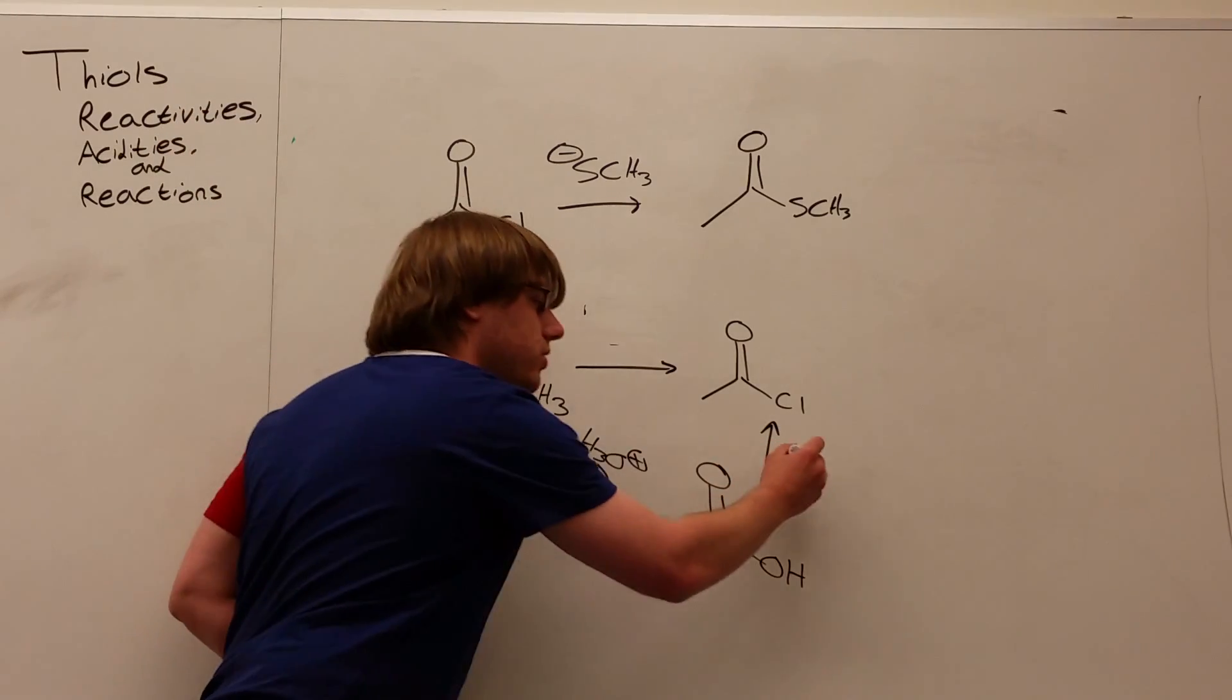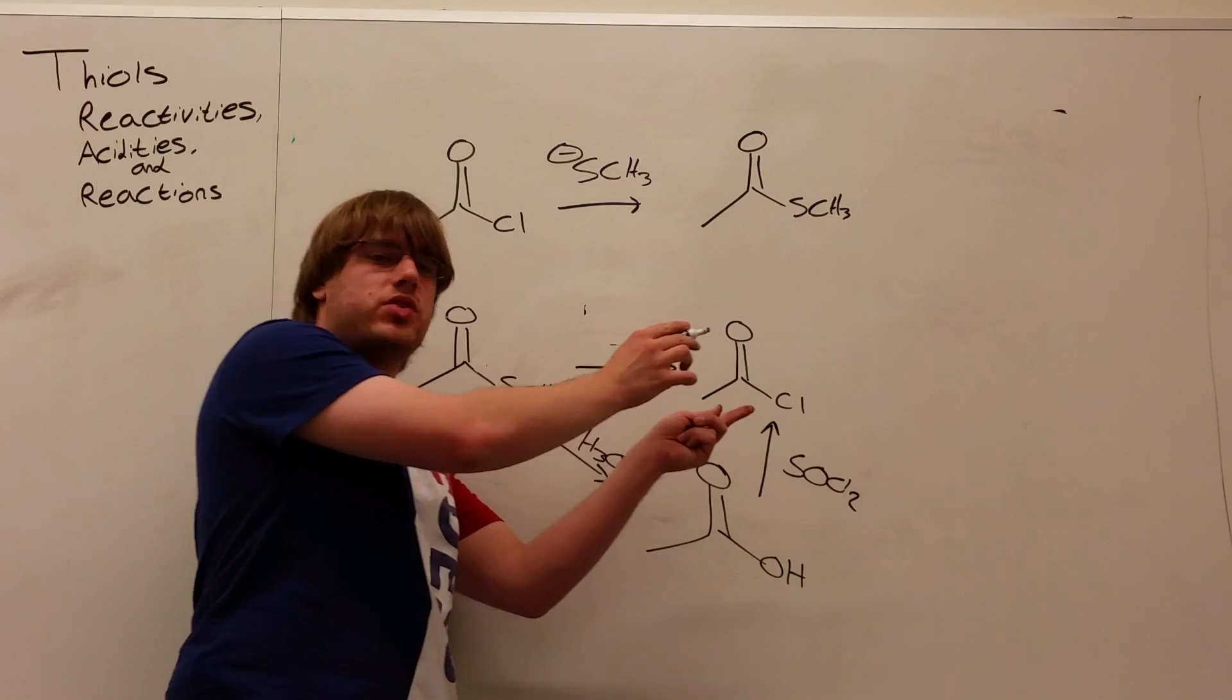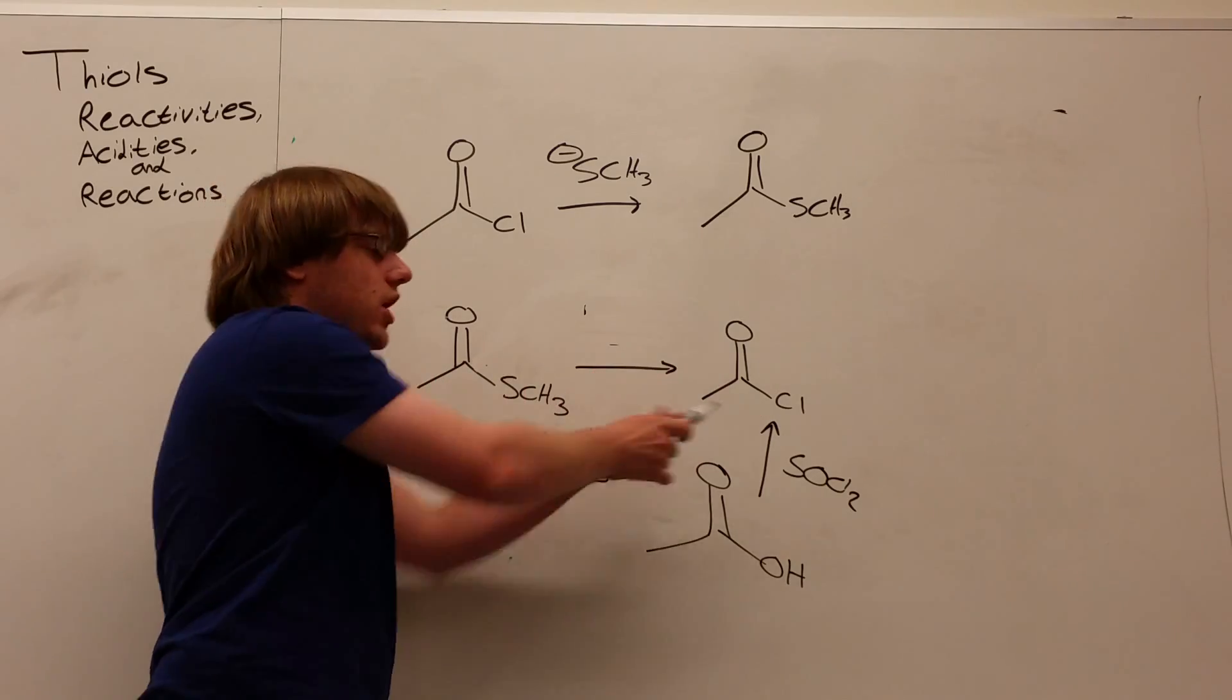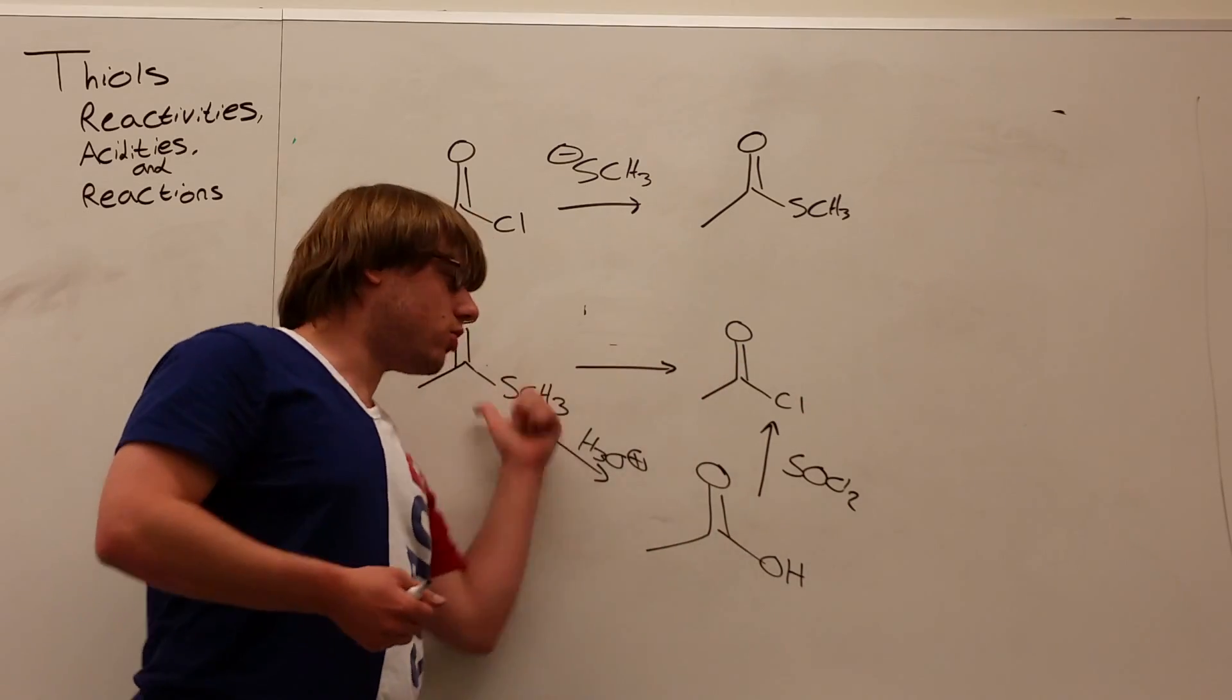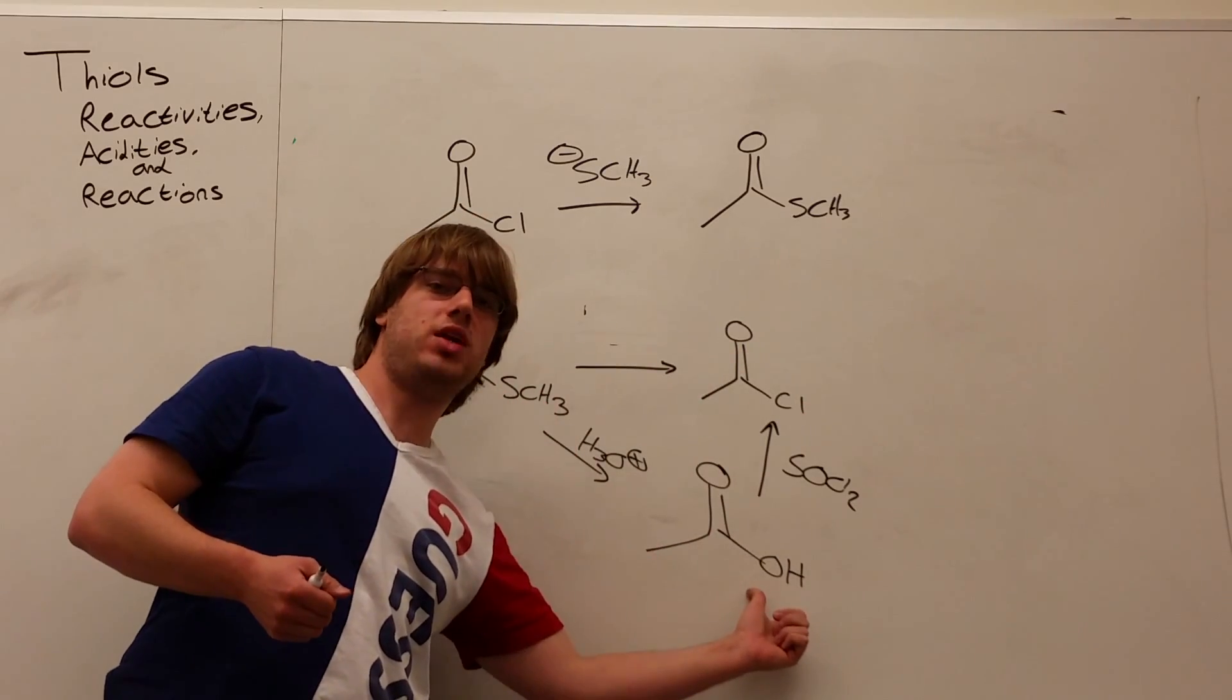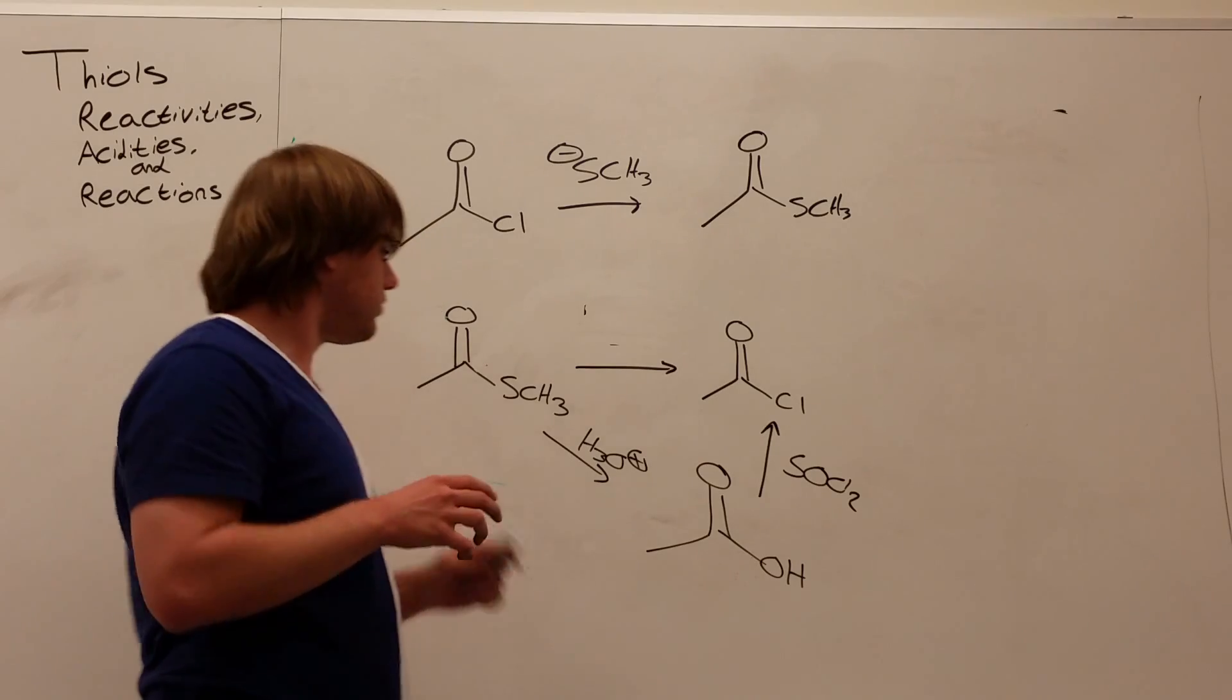And then how do we convert carboxylic acid into an acyl chloride? We use SOCl2. So this is how you would go about this synthesis if your goal is to turn a thioester into an acyl halide. Since an acyl halide is more reactive, you can't do it directly. You go through carboxylic acid as an intermediate, and then you turn that into your acyl halide.